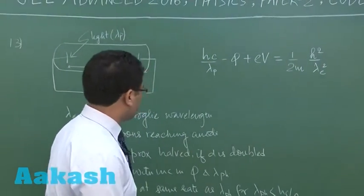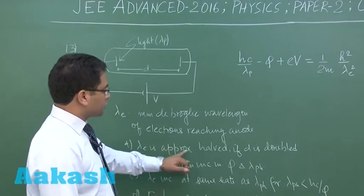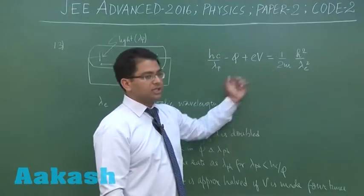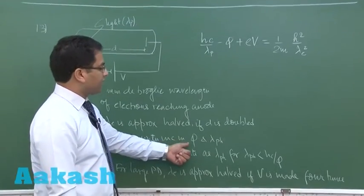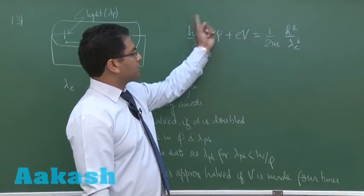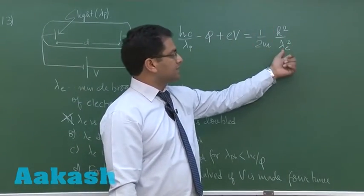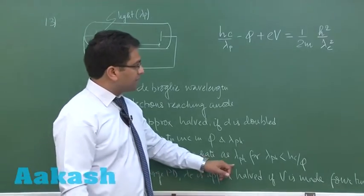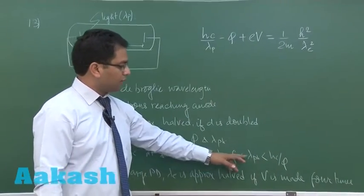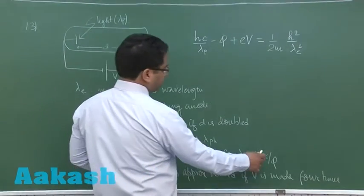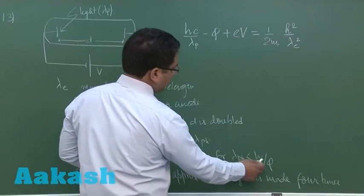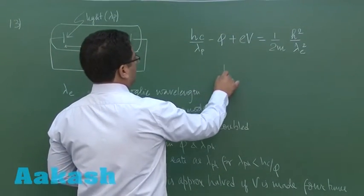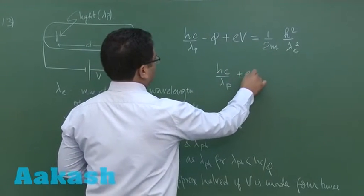Lambda_E is approximately half if D is doubled — that's incorrect because lambda_E has no relation with D. Lambda_E decreases with increase in the work function phi: if you increase phi, the overall kinetic energy decreases, meaning the denominator increases while the option says decreasing — so that's wrong. Lambda_E increases at the same rate as lambda_P: let's examine this using hc divided by lambda greater than phi.